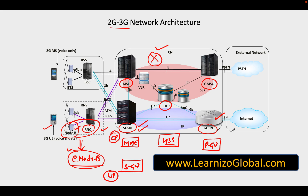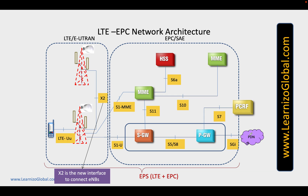We also have some additional functions called PCRF, which typically takes care of quality of service policies as well as charging procedures. Looking at the new picture, instead of BTS, Node B, and RNC, we have one single node referred to as eNodeB. eNodeBs are typically connected via an interface called the X2 interface, which is an optional interface. In further videos we will talk more about the X2 interface.